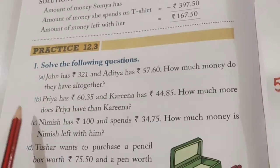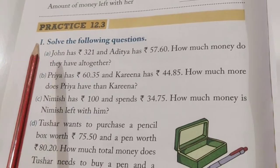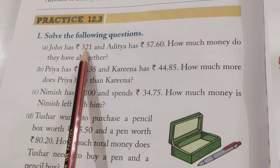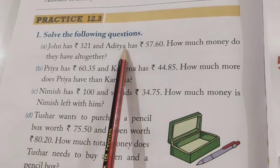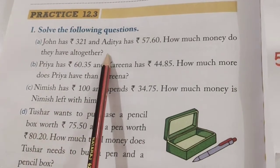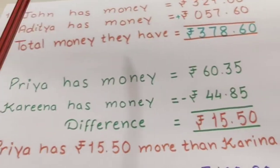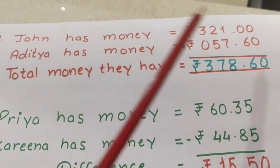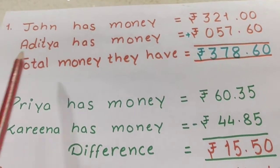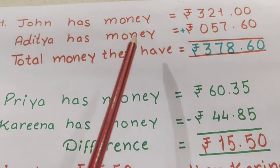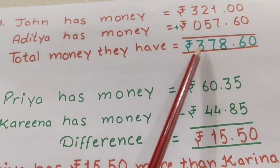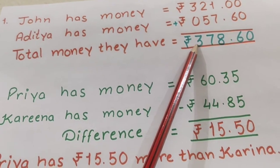Now, see a few statements in exercise 12.3. Statement A: John has rupees 321. Aditya has rupees this much. How much money do they have together? Very simple. John has money this much, Aditya has money this much, and we have to find the total money. So, we will write total money they have, add both of them, and we will get the answer. Very simple.